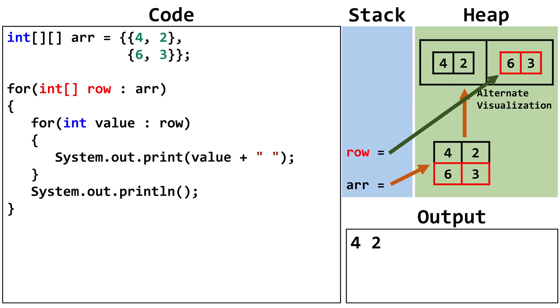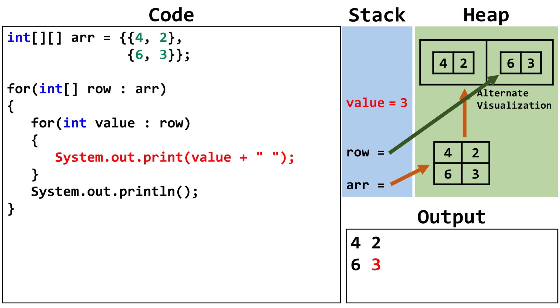We output a new line. Next, the row variable changes to point at the 1D array at index 1. We could also say that row is pointing at row 1 in the 2D array. In the inner loop, we create an int variable value and initialize it with a copy of the element at index 0 in row 1. We output value, which is 6. For the second time through the inner loop, value is set to a copy of the element at index 1 in row 1. We output value, which is 3. We've traversed the entirety of row 1, so we terminate the inner loop. We output a new line. We've traversed all the rows in the array, so we terminate the outer loop and the program ends.